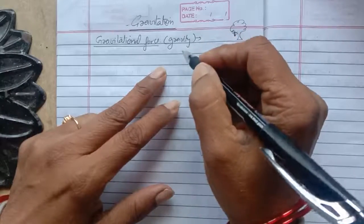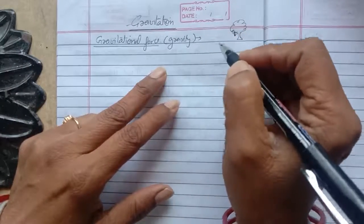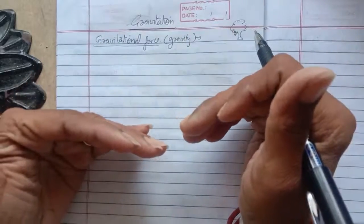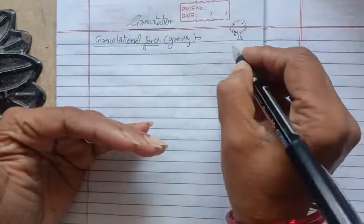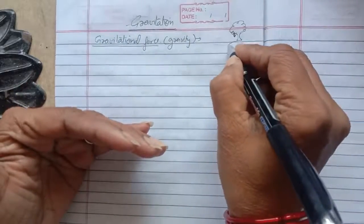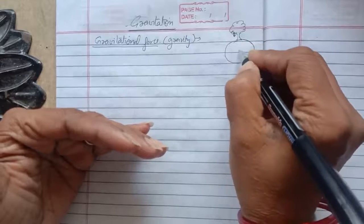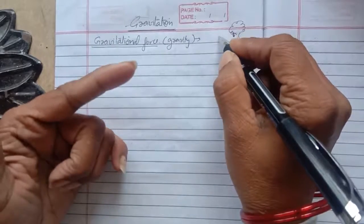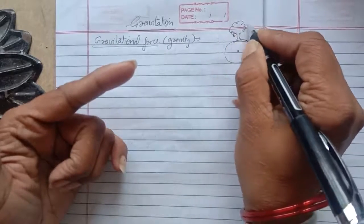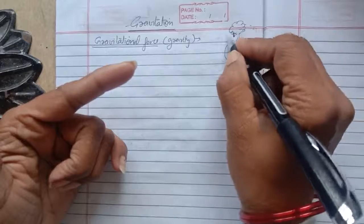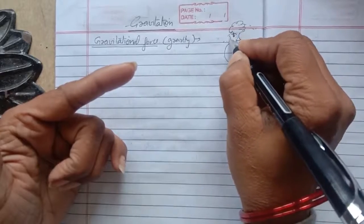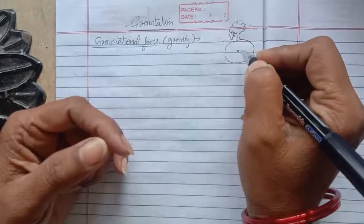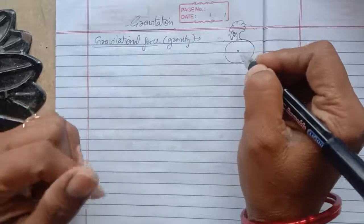So what is gravity? Gravity is a force with which the earth attracts all objects towards its center. This is our earth — it attracts every other object surrounding it towards its center, and this force is called the gravitational force.